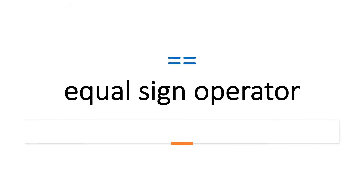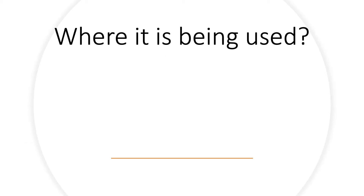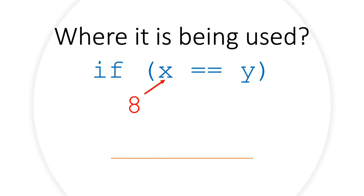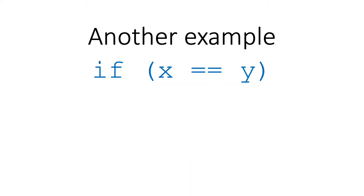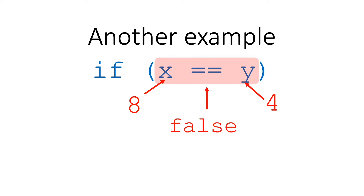The double equal sign, on the other hand, is an equality operator. It is used when you want to test whether the value inside one variable is the same as the value in another variable. For example, if x is 8 and y is also 8, the expression is evaluated as true. If x is 8 and y is 4, the expression is evaluated as false.